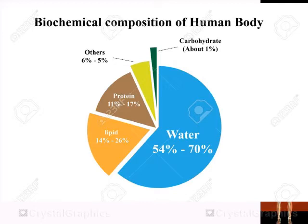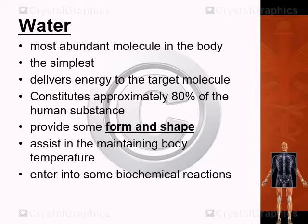Regarding the biochemical composition of the human body, some sources state 80–85% of our body is water; others state 54–70%. Regardless of the exact percentage, the most important thing is that the human body is composed majorly of water compared to other molecules. Carbohydrates are about 1%, protein 11–15%, and lipids 14–26%.